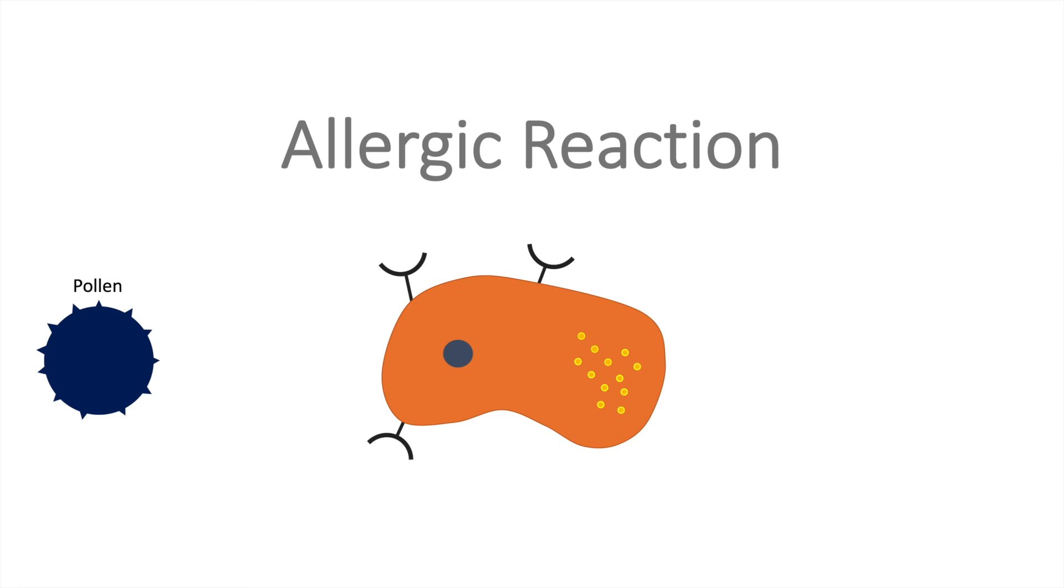Now we sum up real quick what we have learned. The pollen produce antigens which are detected by the mast cell's antibodies. These antibodies have been produced before. When the mast cell gets in contact with a lot of antigens, histamine is released and that causes the allergic reactions like itching or sneezing.